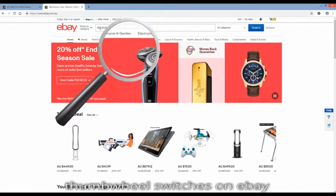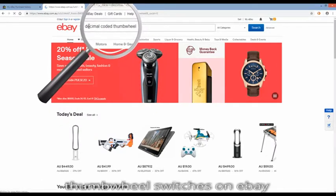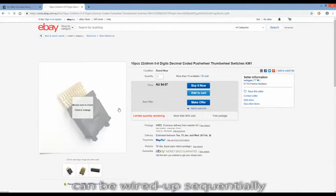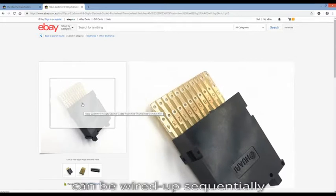This reminded me about some cheap thumb wheel switches I saw on eBay a while ago but didn't have a use for them at the time. Each thumb wheel is basically a 10-way switch that can be wired up to cascade sequentially.